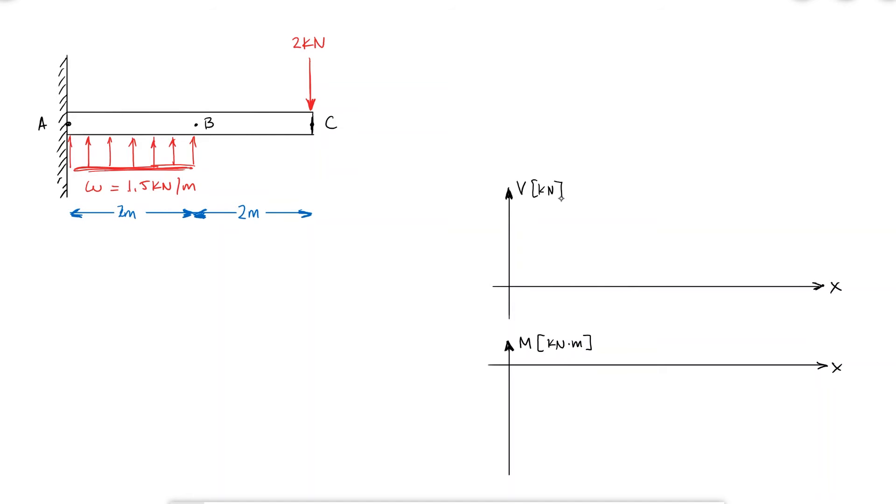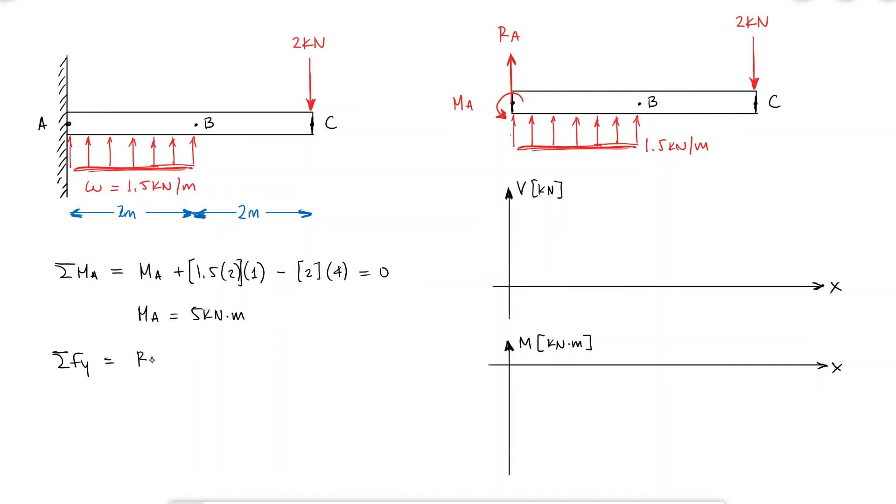For this I need the shear diagram and for it I need to find the reactions at a, which can be easily found with a free body diagram. I will assume positive reactions for both the force and the moment. The sum of moments shows me that ma is equal to 5 kNm and the sum of forces in the y direction reveals that the reaction force a is negative 1 kN.